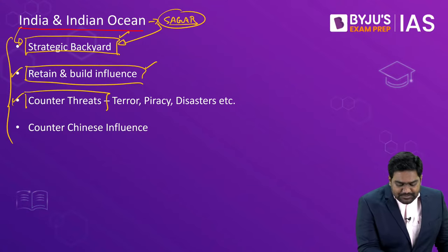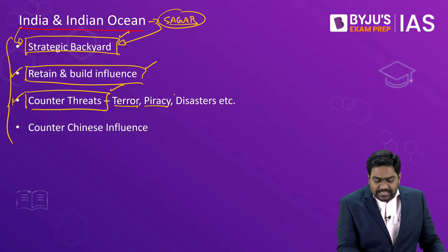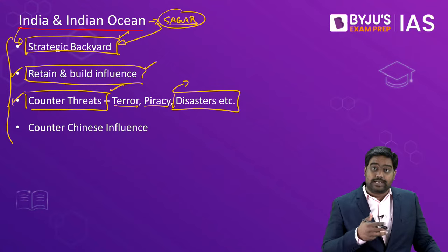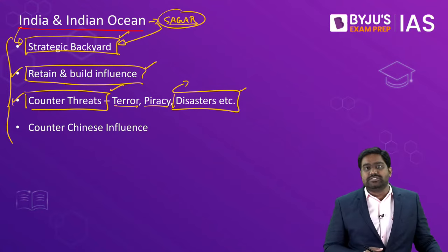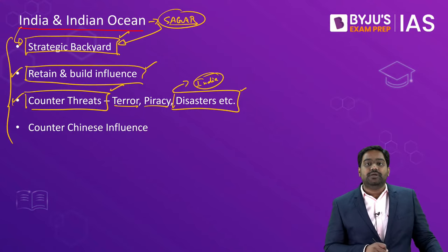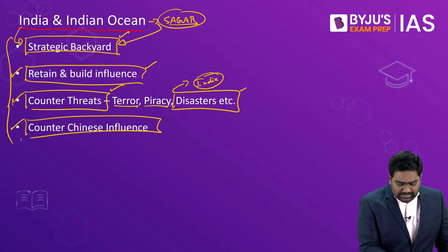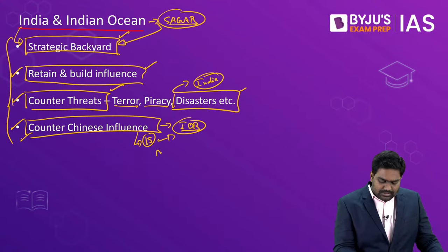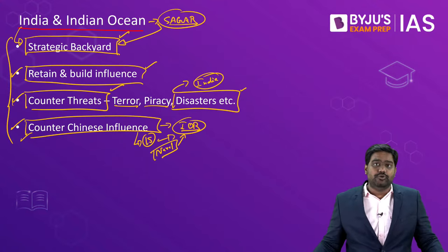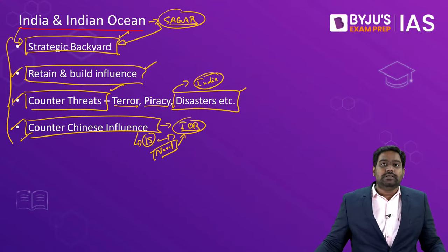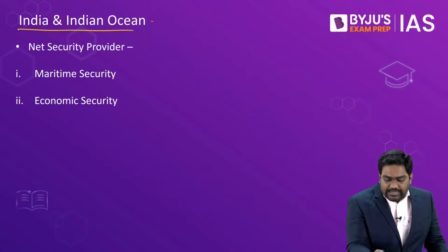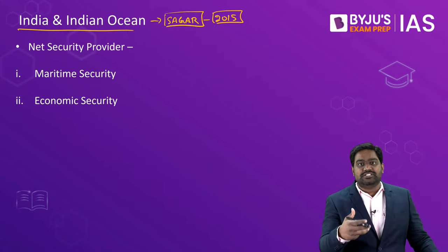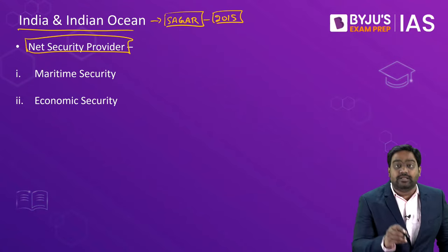India will also take steps to counter various threats including terrorism, piracy, and the threats posed by natural disasters — cyclones, tsunamis, and rising sea levels — which threaten livelihoods across the Indian Ocean. The primary focus is to counter the rising Chinese influence. In the last 15 years, China's naval presence has grown significantly across the Indian Ocean, directly threatening India's maritime interests. Prime Minister Modi announced the SAGAR doctrine in 2015 so that India can emerge as the net security provider of the region.